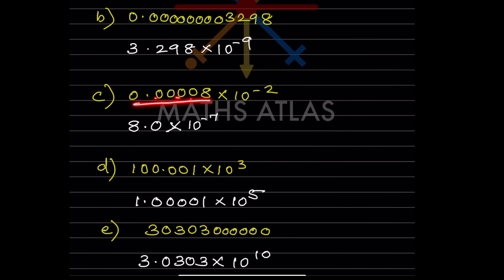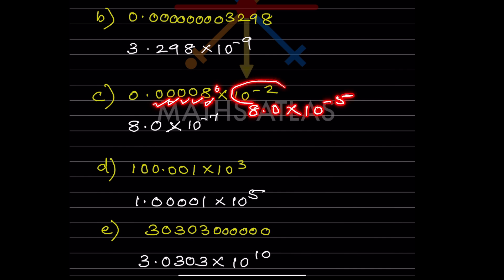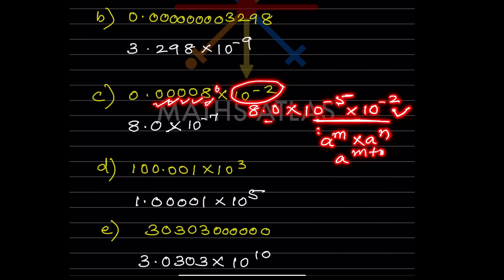If the number is 0.00...8, the power of 10 will be negative. We consider the 8 and write 8.0. Counting from the decimal position backwards: 1, 2, 3, 4, 5, so we get 8 × 10^-5. Alternatively, using the exponent rule a^m × a^n = a^(m+n), we get 8.0 × 10^-2, then combining: -2 + (-5) gives minus 7, so 8 × 10^-7.